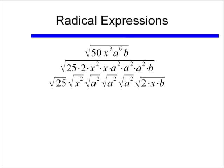Well if I sort these, then I have square root of 25, square root of x squared, square root of a squared, and I have those three separate times. And then left over is a 2, an x, and a b, and I'll leave those together under a square root sign.